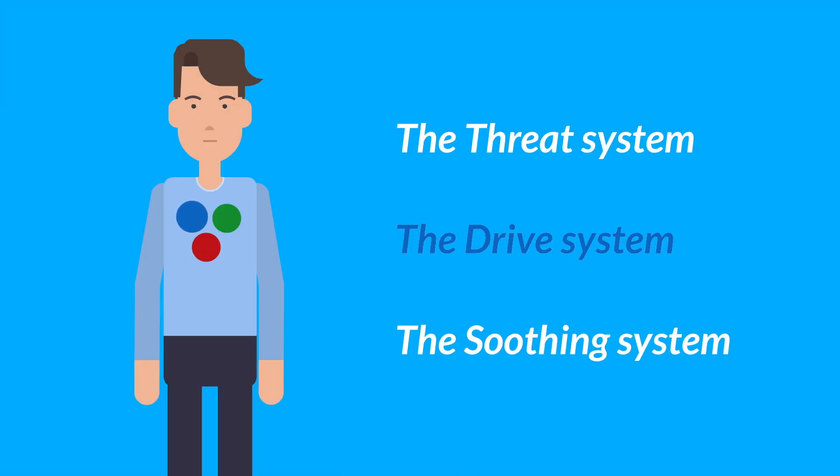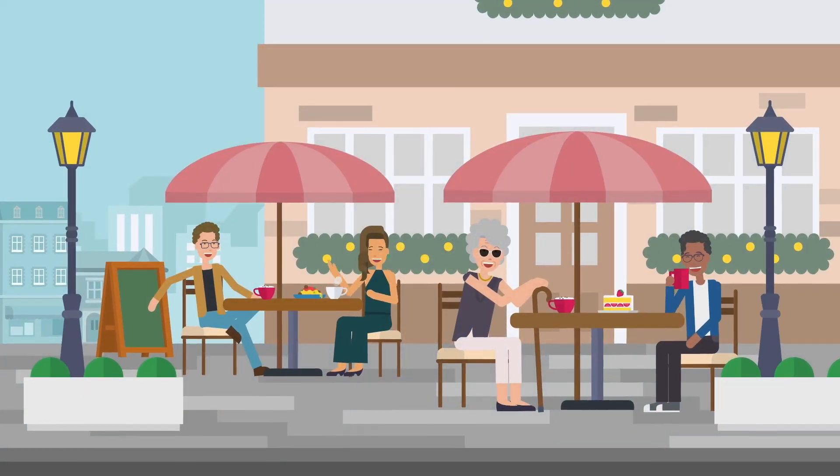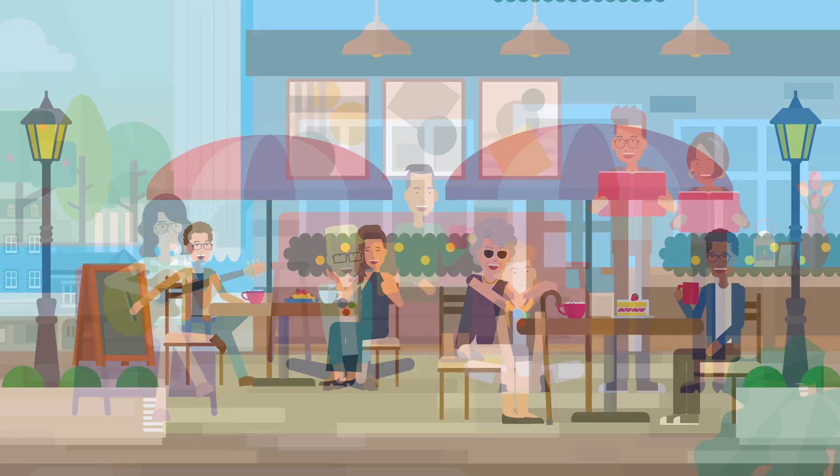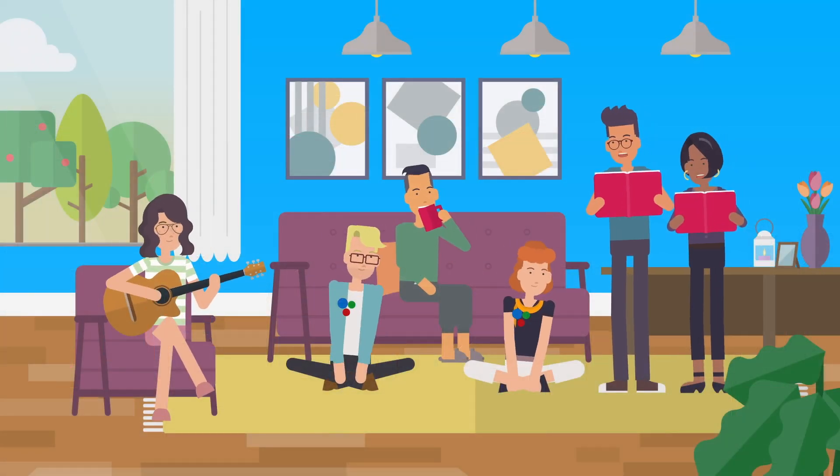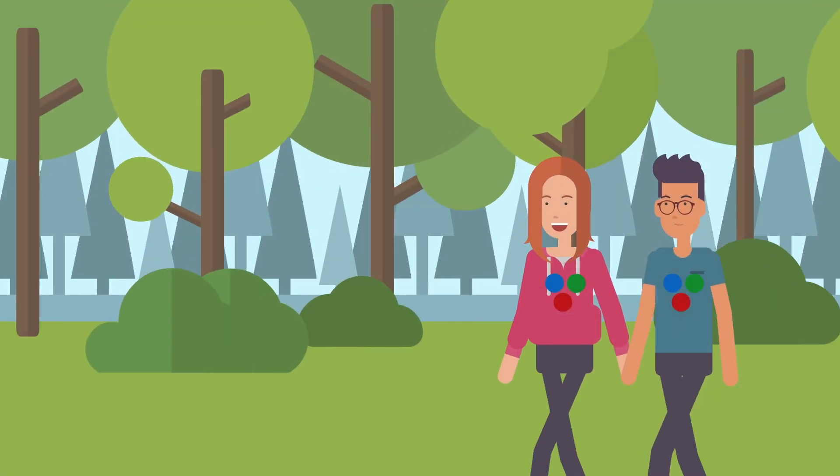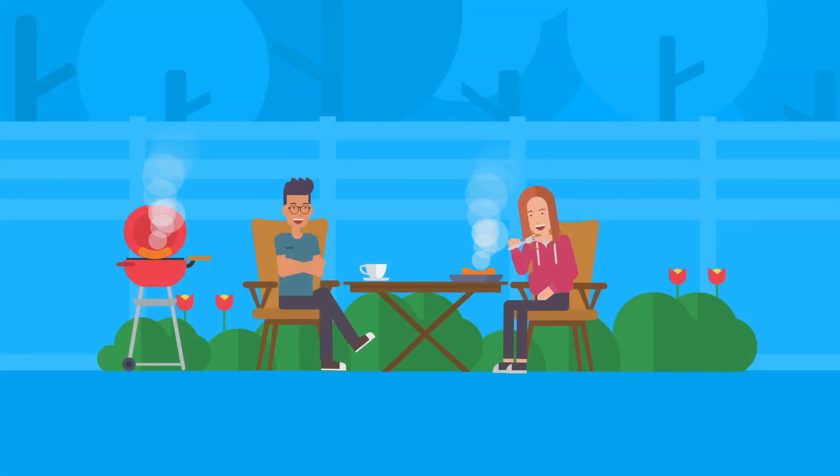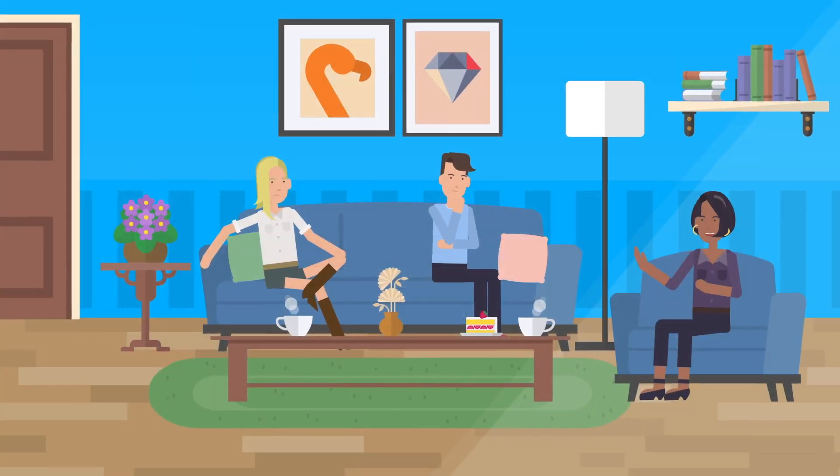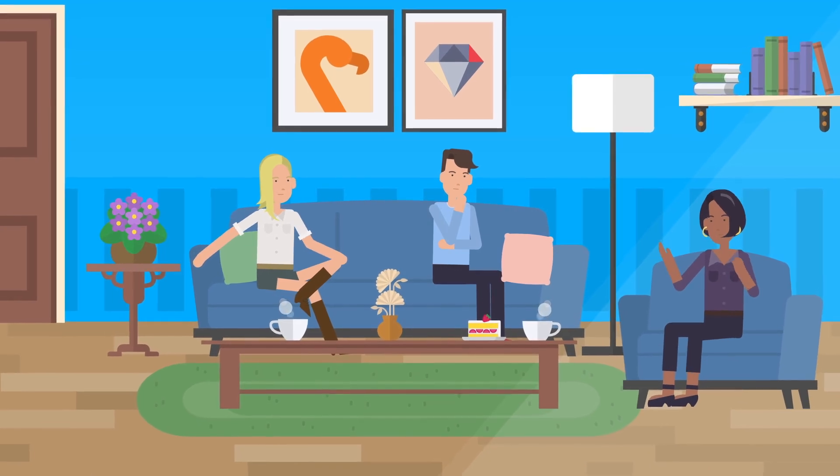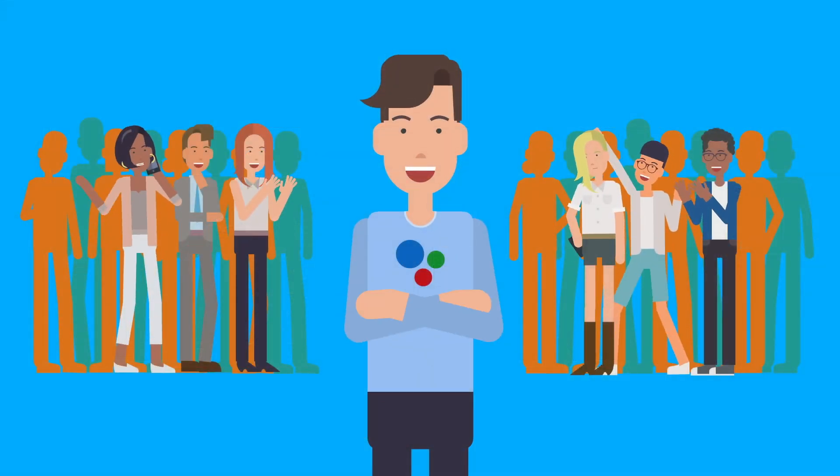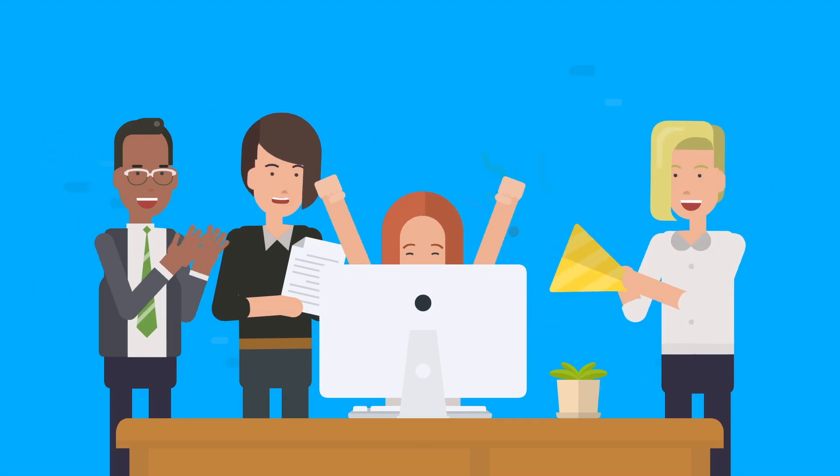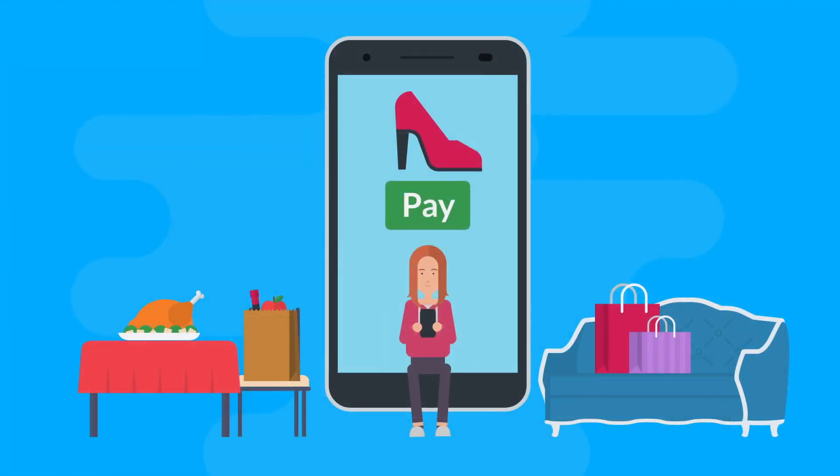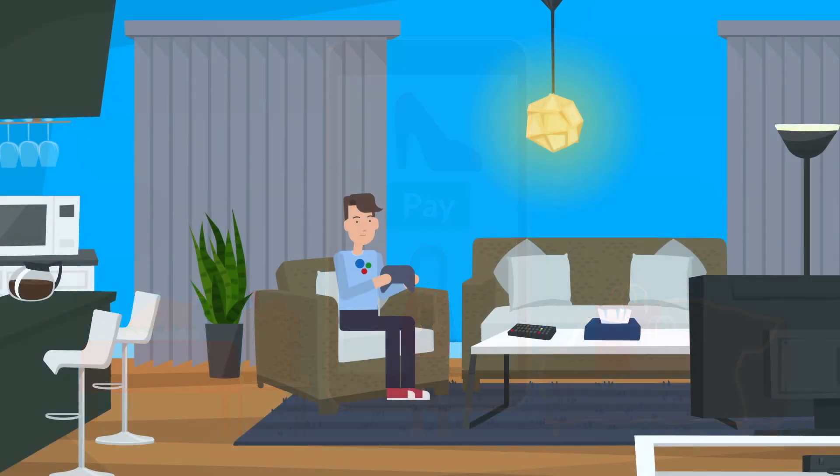The second system is the drive system or blue circle. This system helps us pursue things that are important to our survival like being connected with others, having food and having shelter. The blue circle also drives us for other wants as well, like wanting to be popular or the best at something, or getting those new shoes or video game.